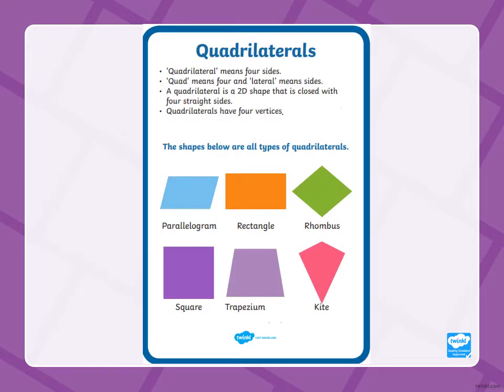Okay, quadrilaterals — this means four sides. Quad means four and lateral means sides. A quadrilateral is a 2D shape that is closed with four straight sides. Quadrilaterals have four vertices.